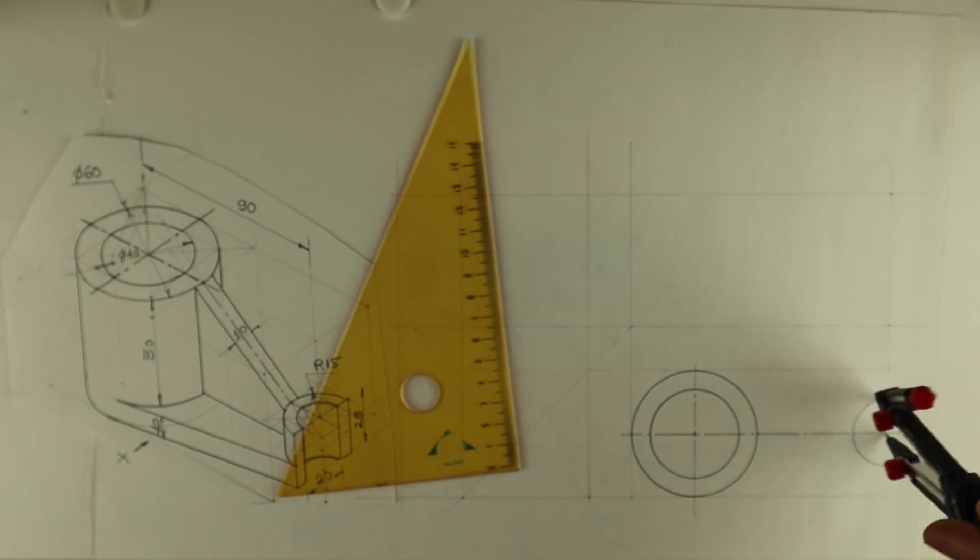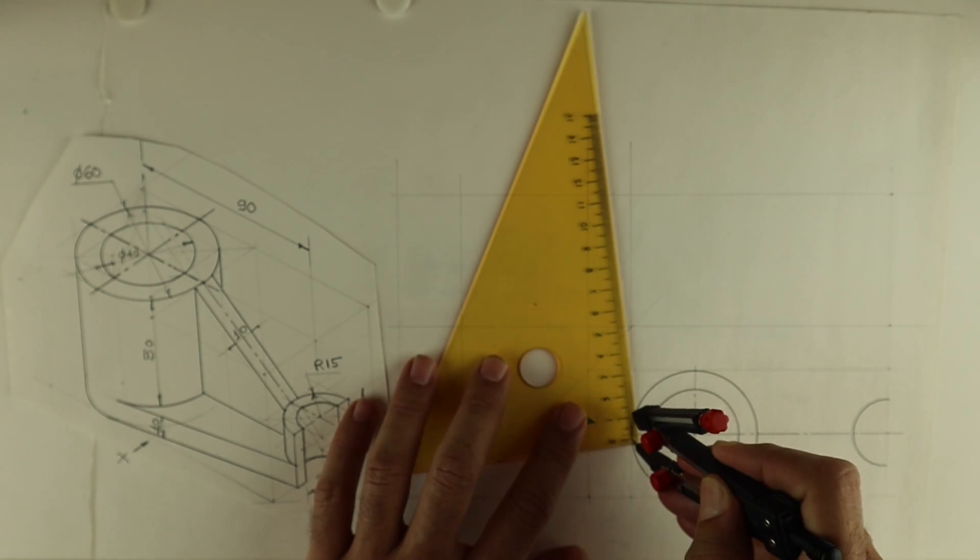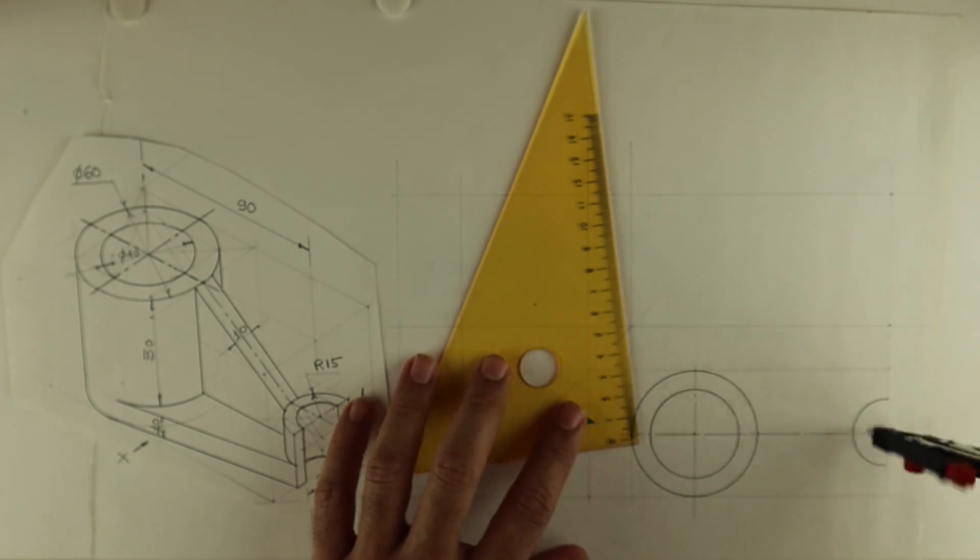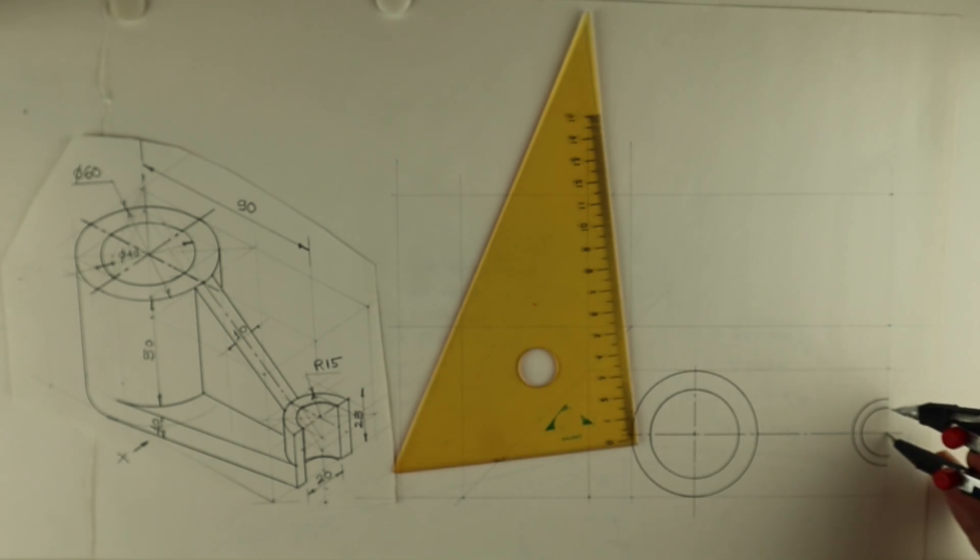After that we have radius 15. That also we will draw, and radius 10. If you see the entire circle, this is diameter 20, so take radius 10. After drawing all the circles...